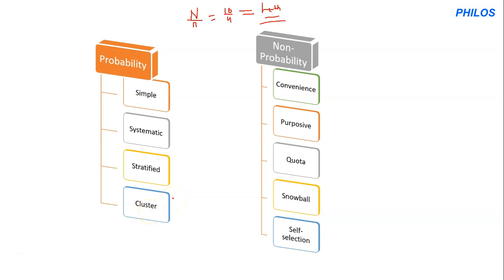For cluster sampling, the population has already been divided by naturally occurring situations. You use all the members in one of those divisions as a representative of the others, and then question them.